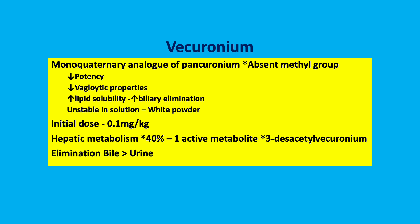Initial dose 0.1mg per kg. Hepatic metabolism 40% with one active metabolite which will accumulate under prolonged infusion — 3-desacetyl vecuronium — with elimination via the bile but also urine.